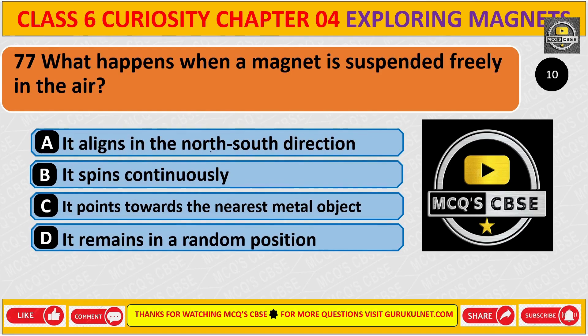What happens when a magnet is suspended freely in the air? The correct answer is A. It aligns in the North-South direction.